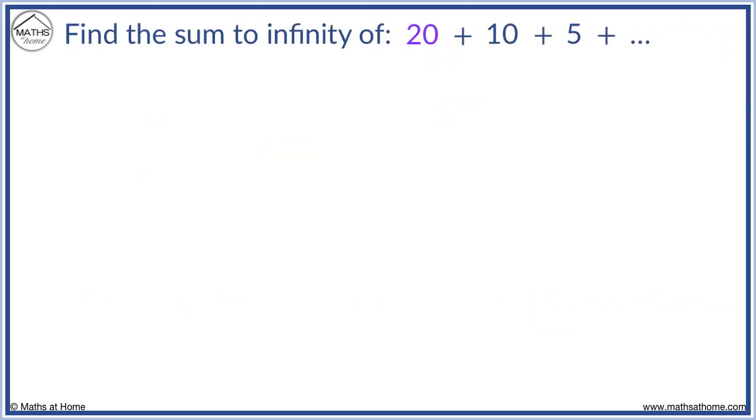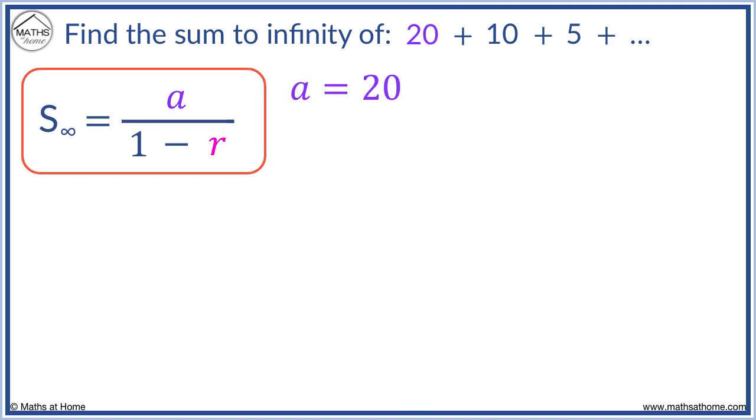For example, find the sum to infinity of this series. We use our formula. A is the first term of 20. To find r, take any term and divide by the term that came before it. So 10 divided by 20 equals 1 half.